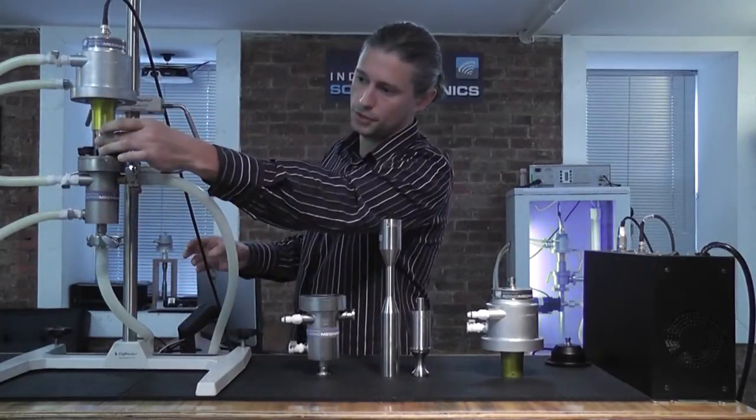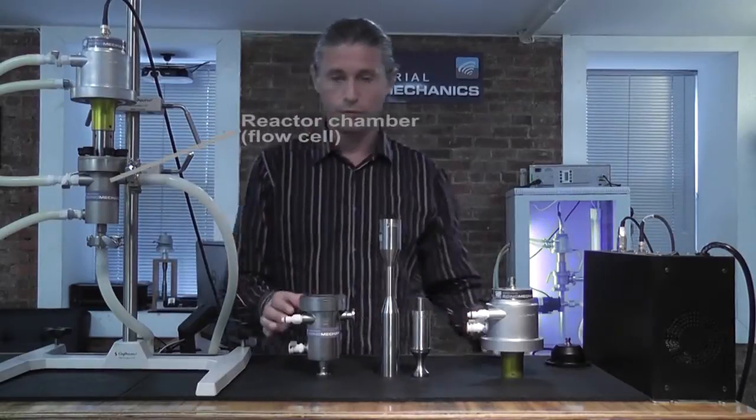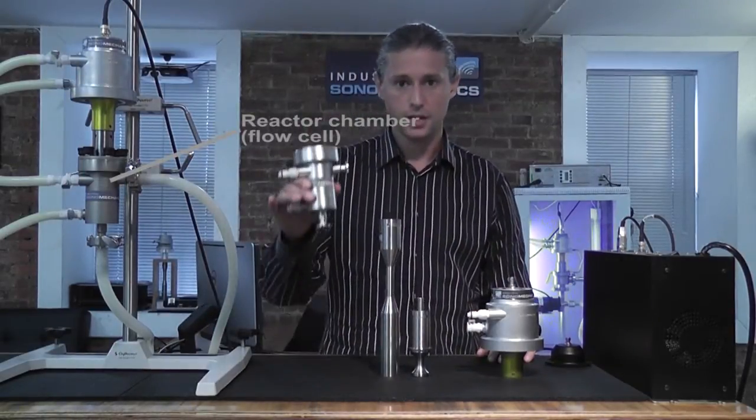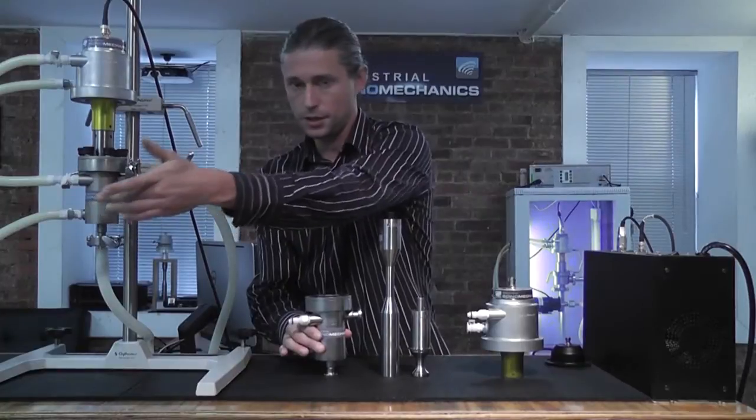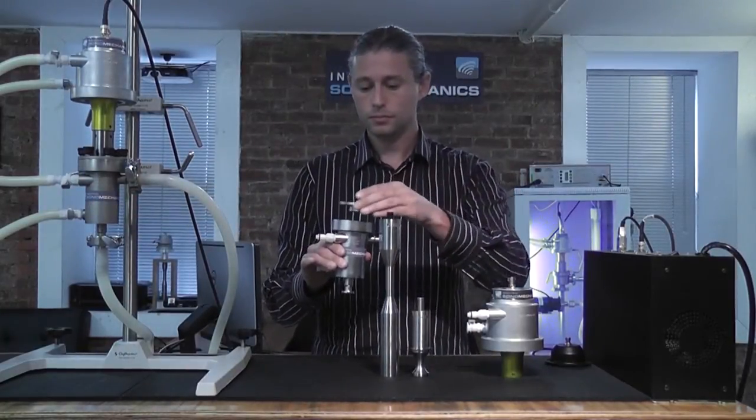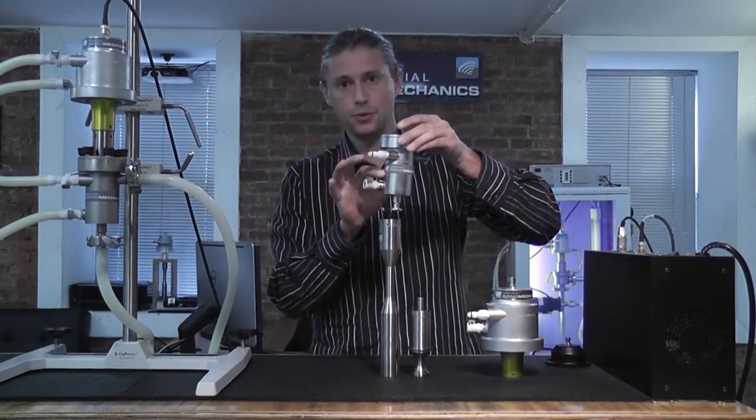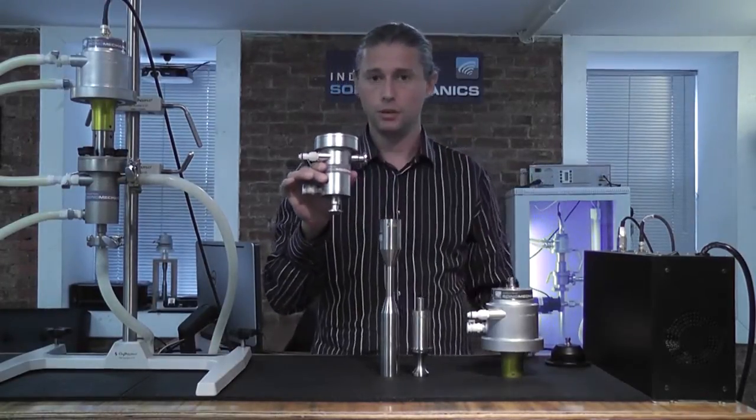This is the part of the assembly which you cannot see because it's inserted in the next fourth component, which is the reactor chamber. You have this here in the assembly, which has a lid, and it also has a cooling jacket, which allows you to control the temperature of the liquid being processed.